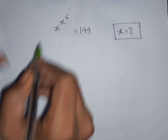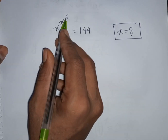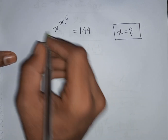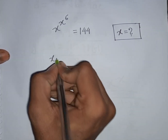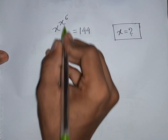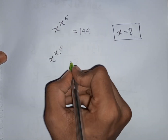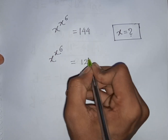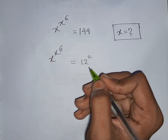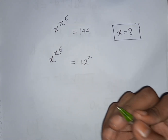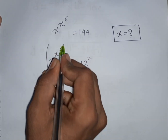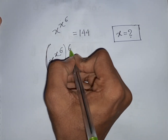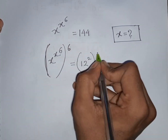How to solve x^(x^6) = 144. Find the value of x. We note that 144 = 12². Now we raise both sides to the power of 6.